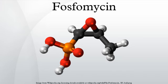Phosphomycin is bactericidal and inhibits bacterial cell wall biogenesis by inactivating the enzyme UDP-N-acetylglucosamine-3-enolpyruvyl transferase, also known as MurA. This enzyme catalyzes the committed step in peptidoglycan biosynthesis, namely the ligation of phosphoenolpyruvate to the 3-hydroxyl group of UDP-N-acetylglucosamine. This pyruvate moiety provides the linker that bridges the glycan and peptide portions of peptidoglycan. Phosphomycin is a PEP analogue that inhibits MurA by alkylating an active site cysteine residue. Phosphomycin enters the bacterial cell through the glycerophosphate transporter.